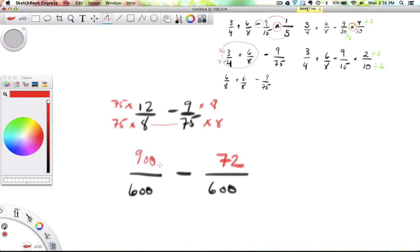900. And so now I'm doing 900 minus 72. 900 minus 72, that's 828 over 600.